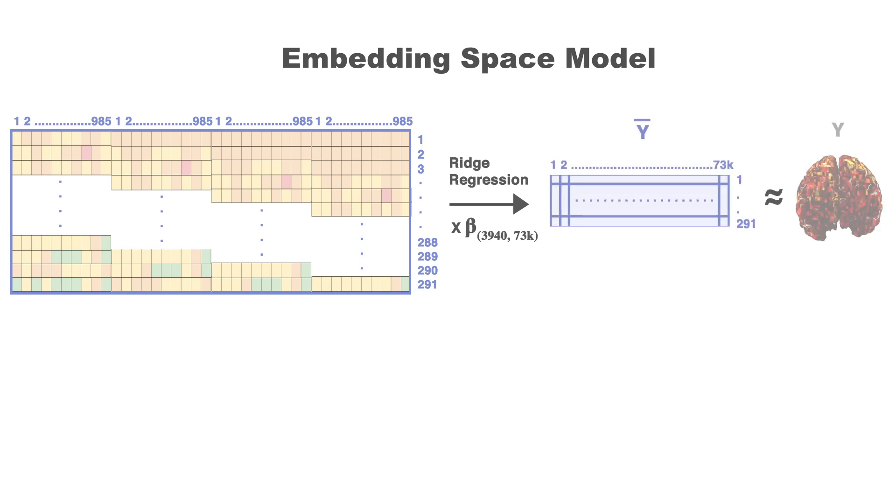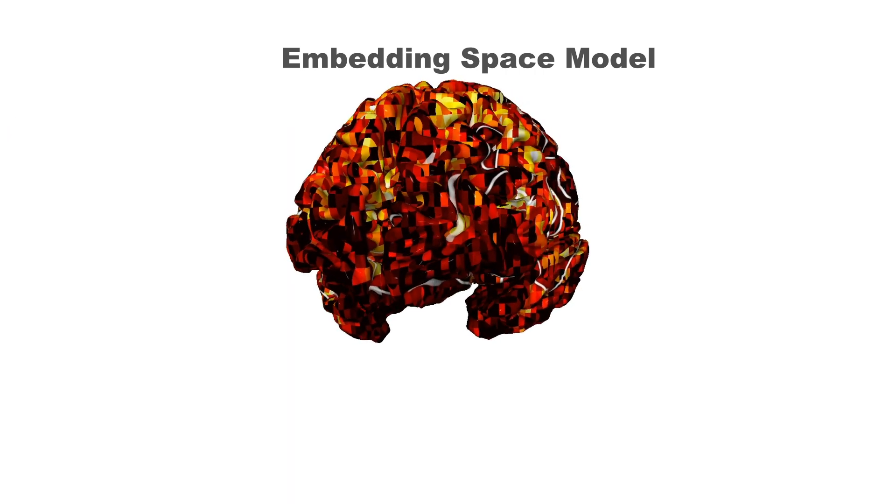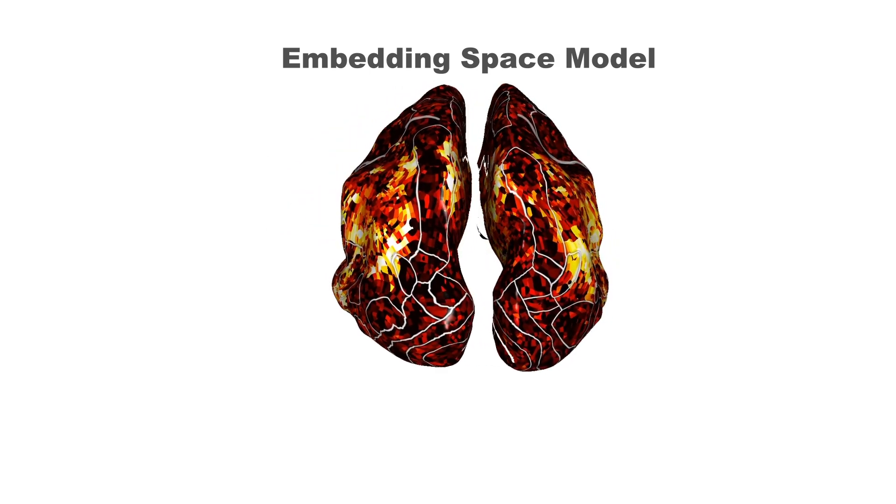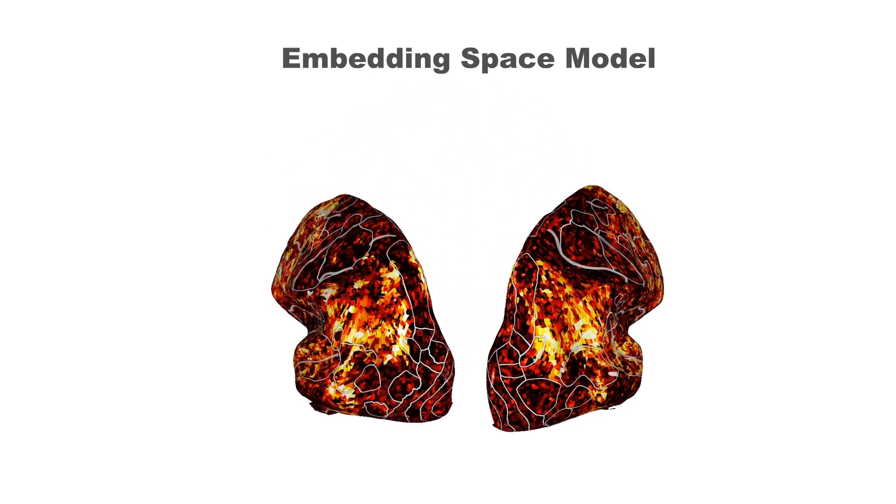And we can evaluate its performance by measuring the correlation between the true and predicted responses. The brightly colored regions show areas of the brain where this model made predictions with high correlation. And as you can see, it does pretty well.